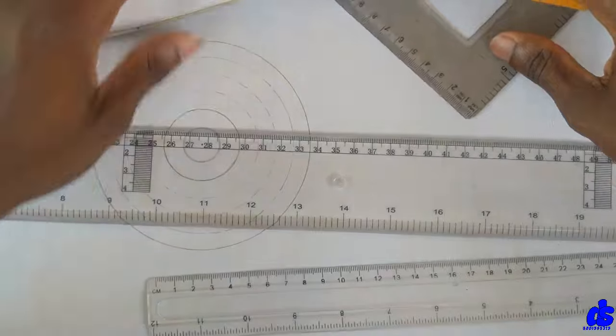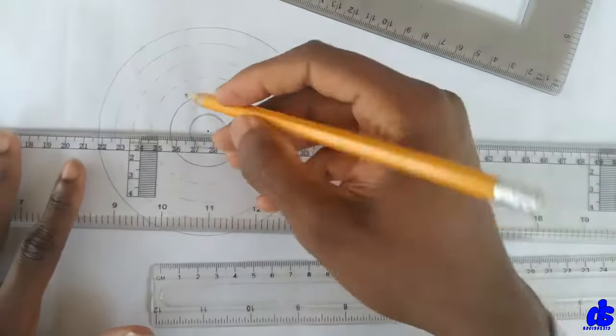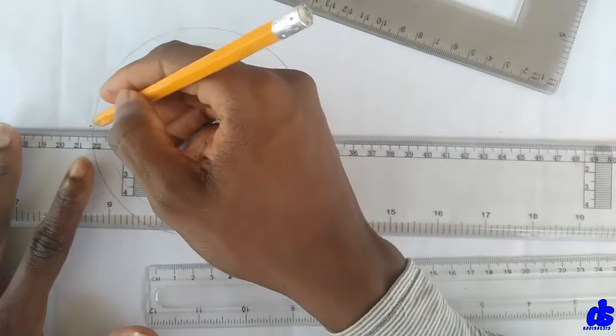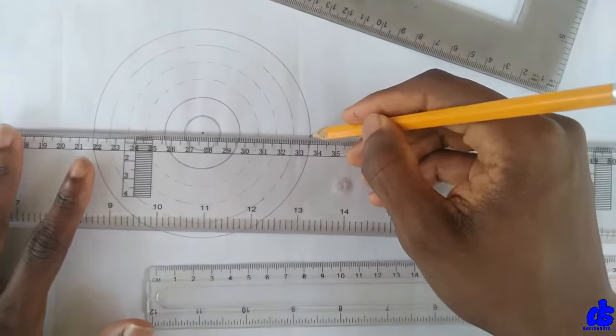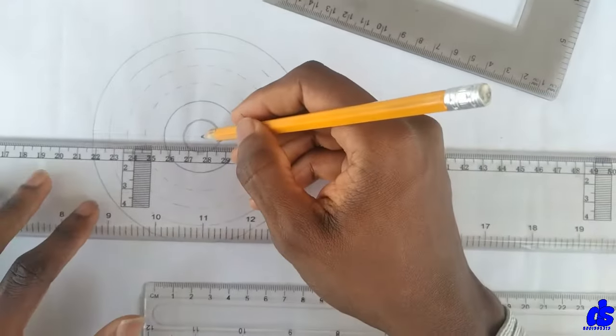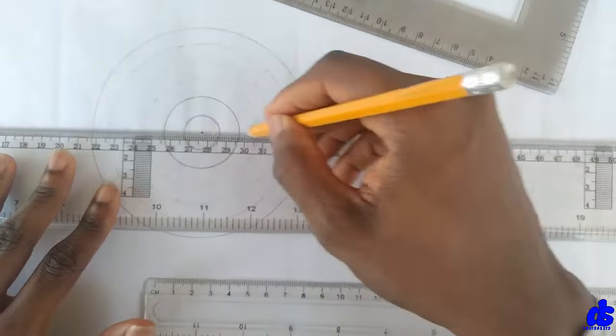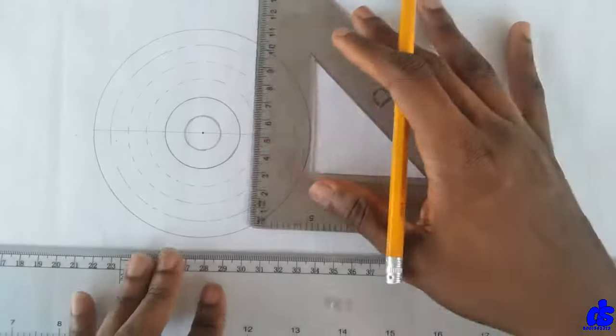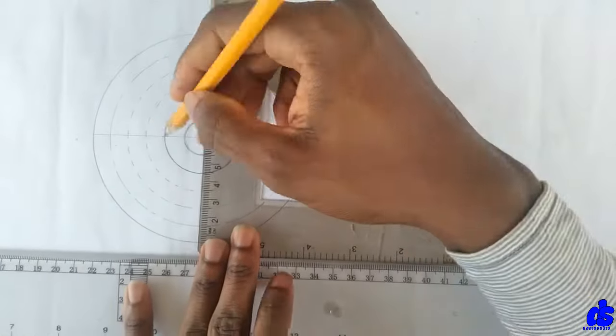So now I'm going to use my T-square. My T-square will aid me to draw the horizontal line and my set square will aid me to get the vertical line.